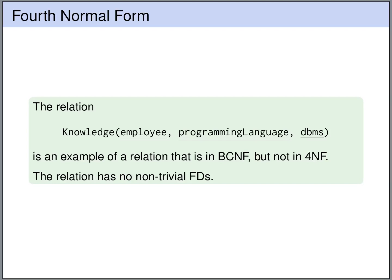In practice, however, it's not very common that the Fourth Normal Form is violated while Boyce-Codd Normal Form is not. The table we've seen before — with employees, knowledge of programming languages, and knowledge of database management systems — is an example of a relation that is in Boyce-Codd Normal Form because there are no non-trivial functional dependencies, but it is not in Fourth Normal Form.